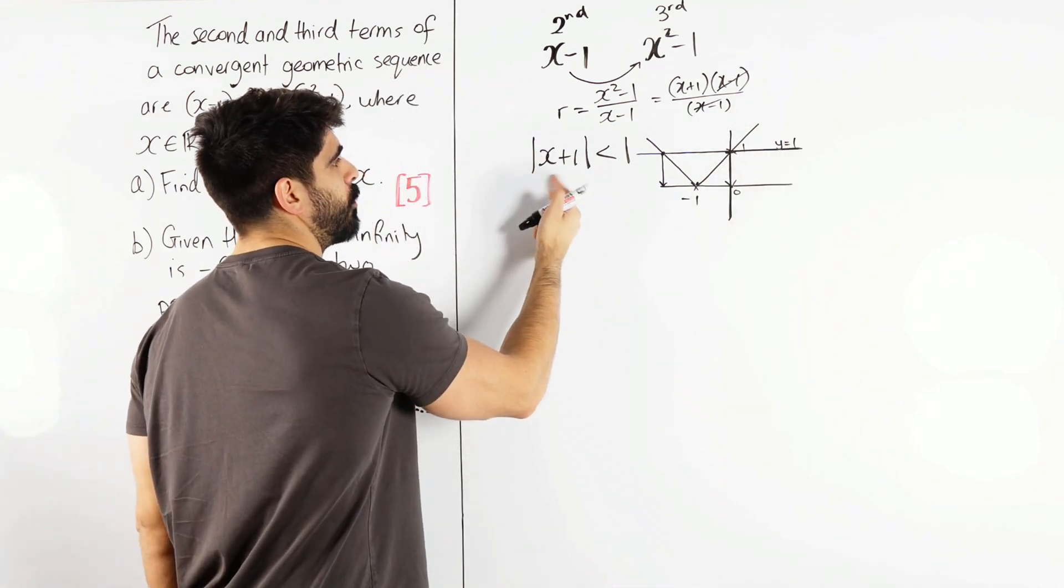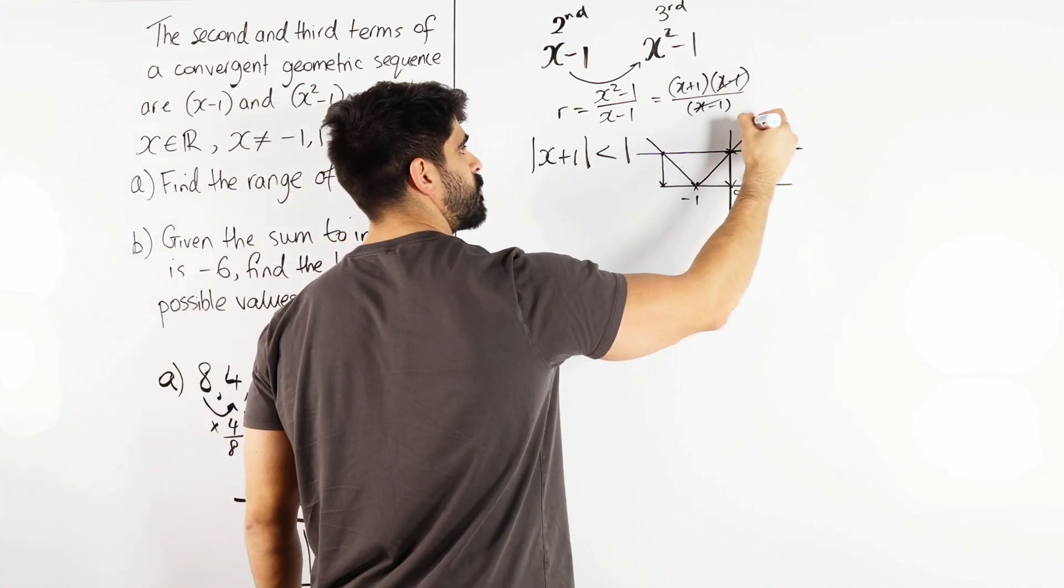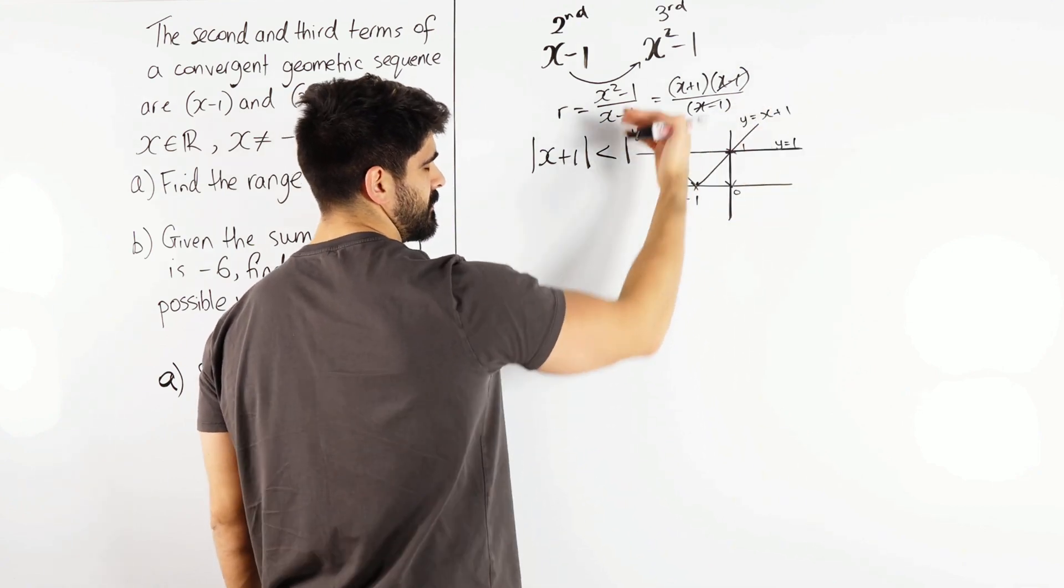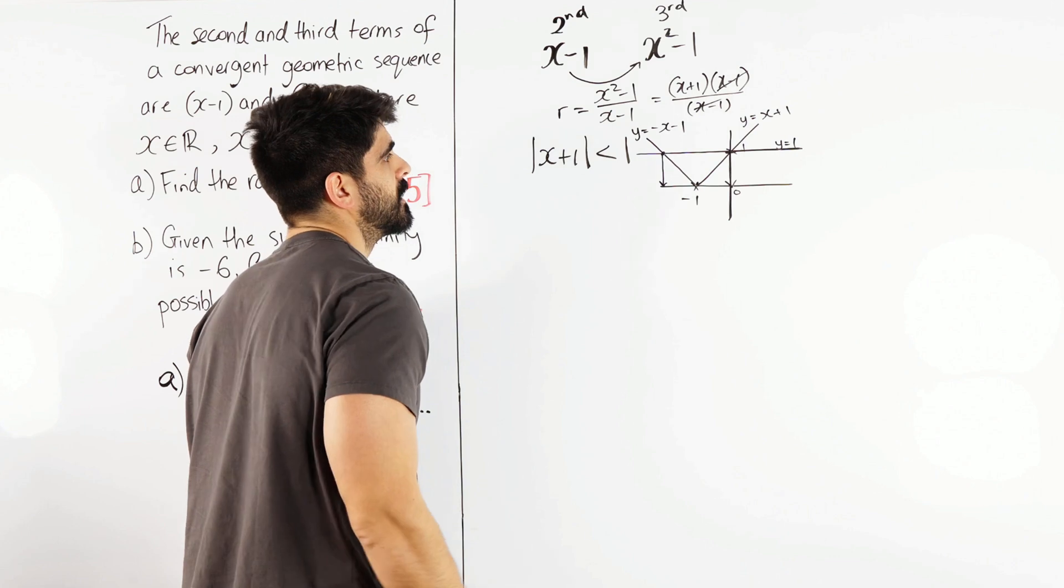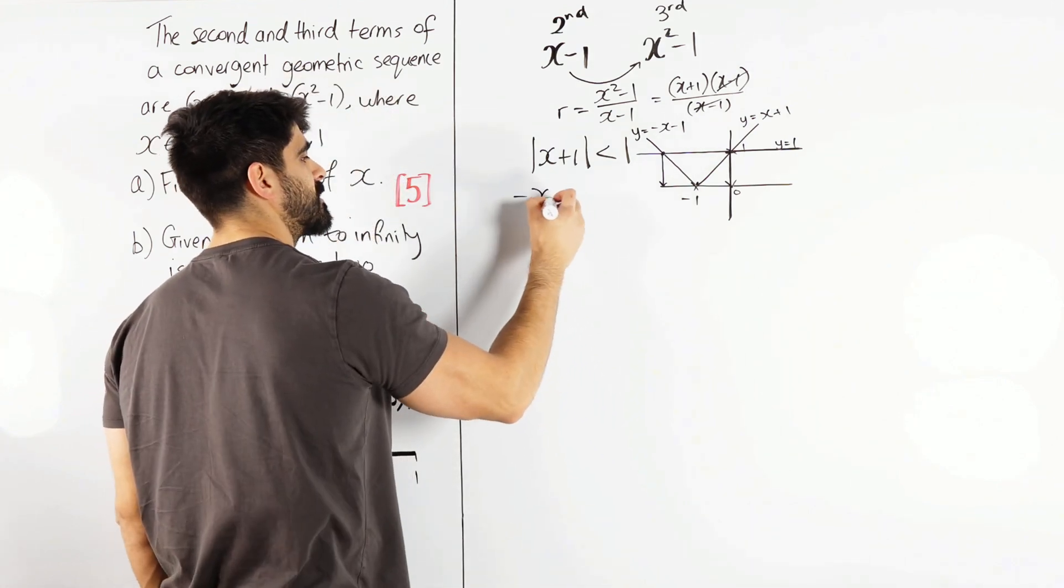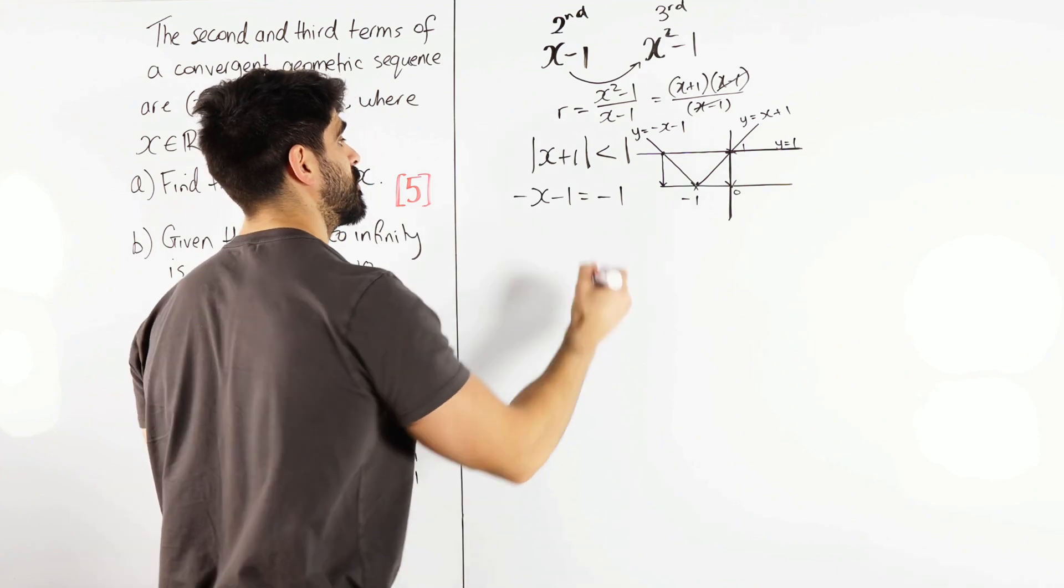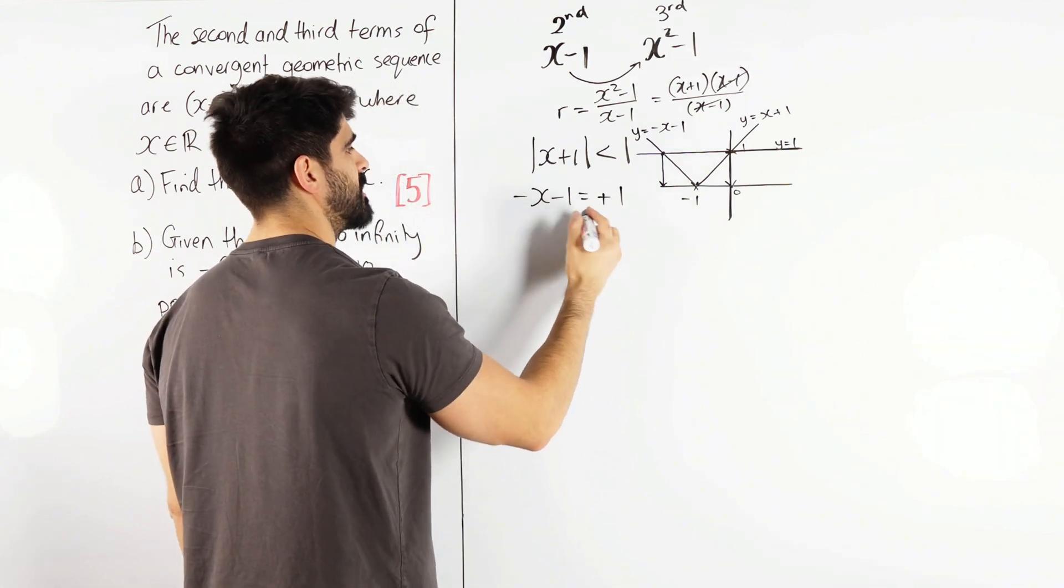Now remember we're looking at y equals x plus 1. That's the positive gradient. That's this one. So this is y equals x plus 1. This one would be the negative of that because that's the reflected part. So minus x minus 1. So we're going to let minus x minus 1 equal - oh sorry, just plus 1. My bad. We're equating it to that. So we get x is minus 2.